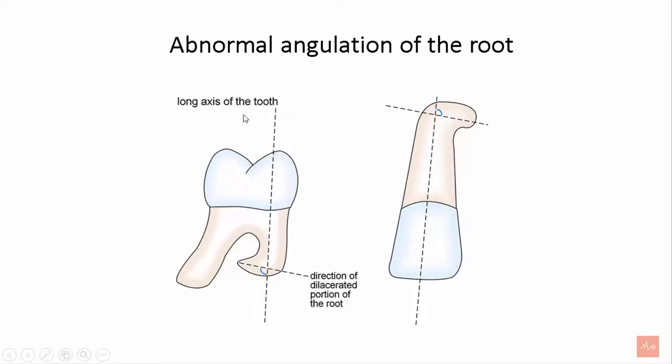As you can see this root, this follows the long axis of the tooth. However, this root does not follow and has a bend at an angle. This is a dilacerated portion of the root.